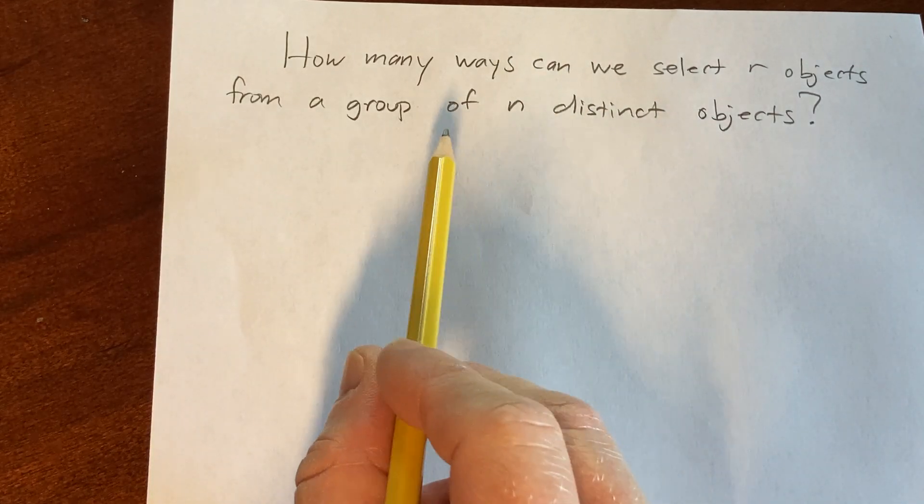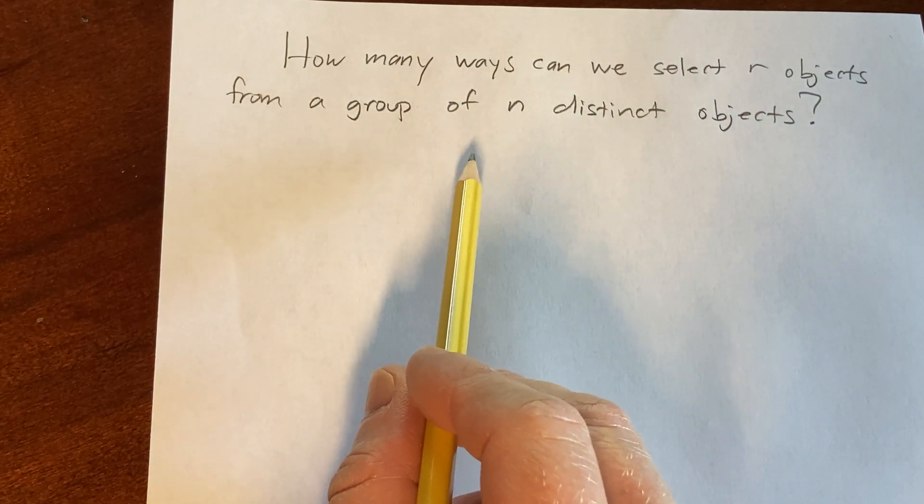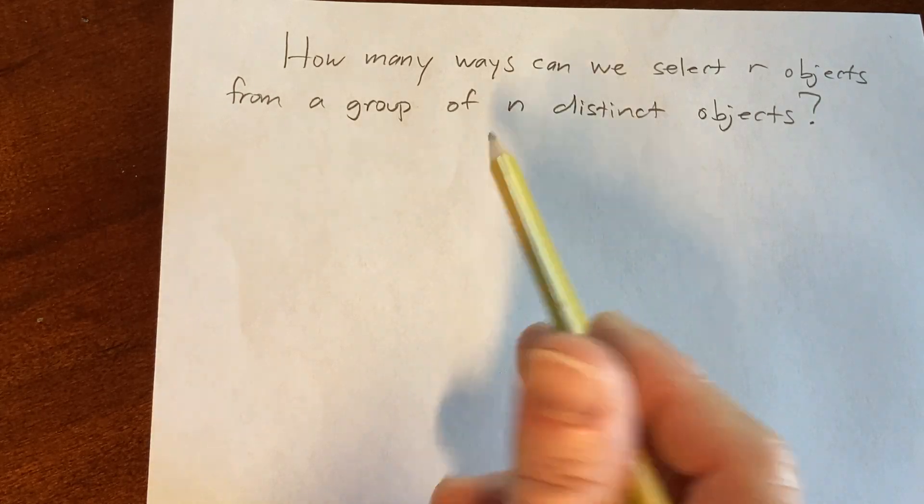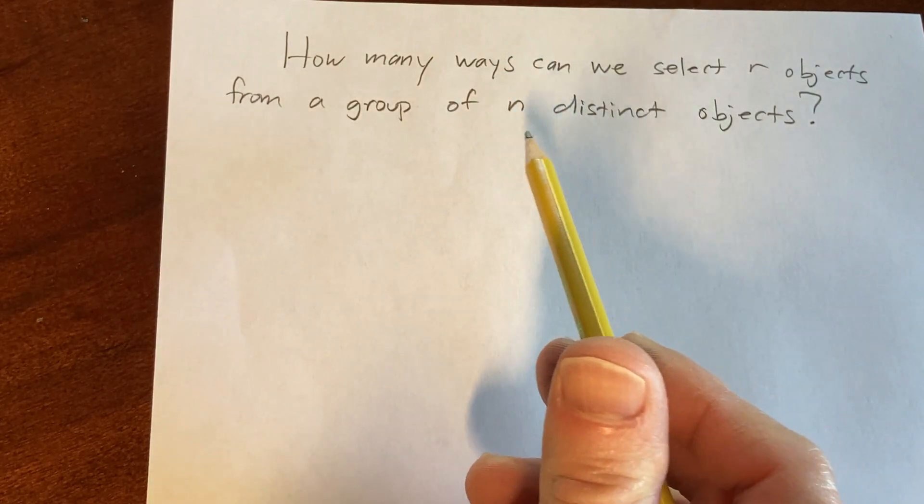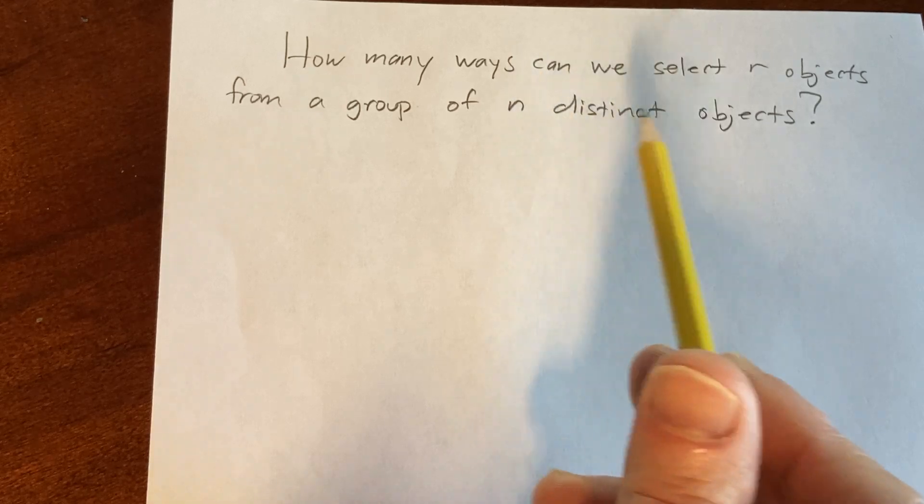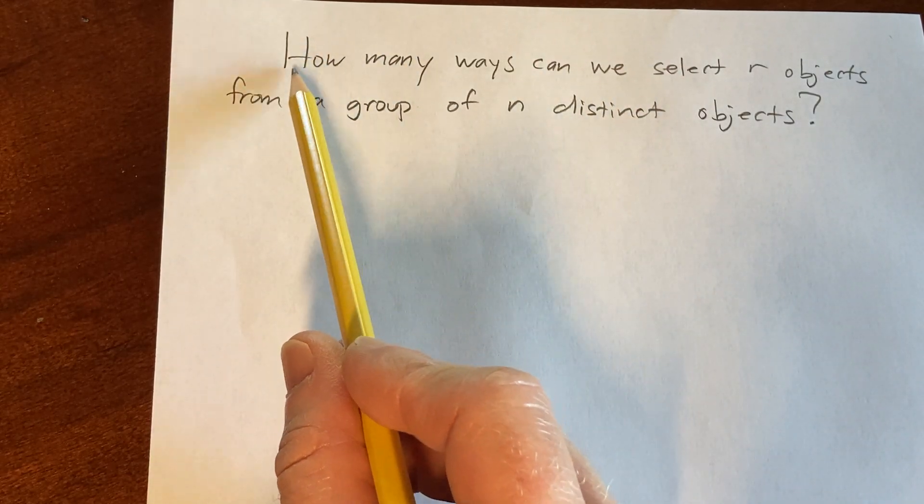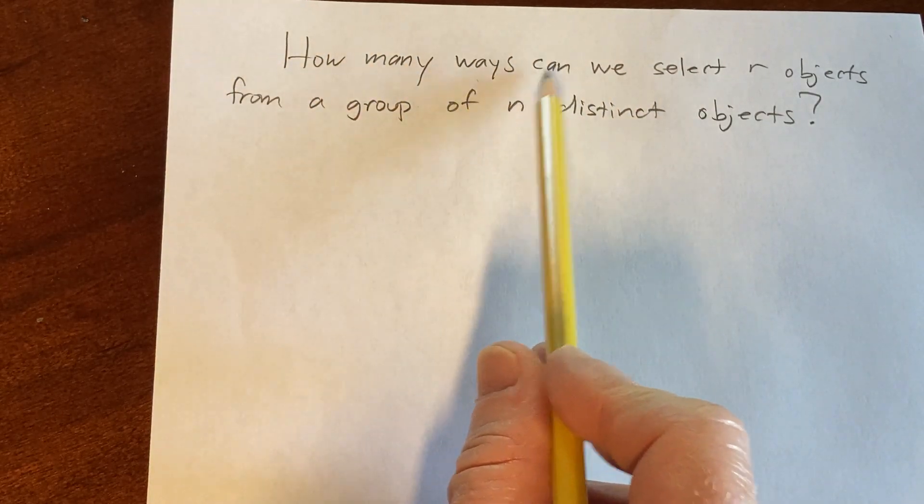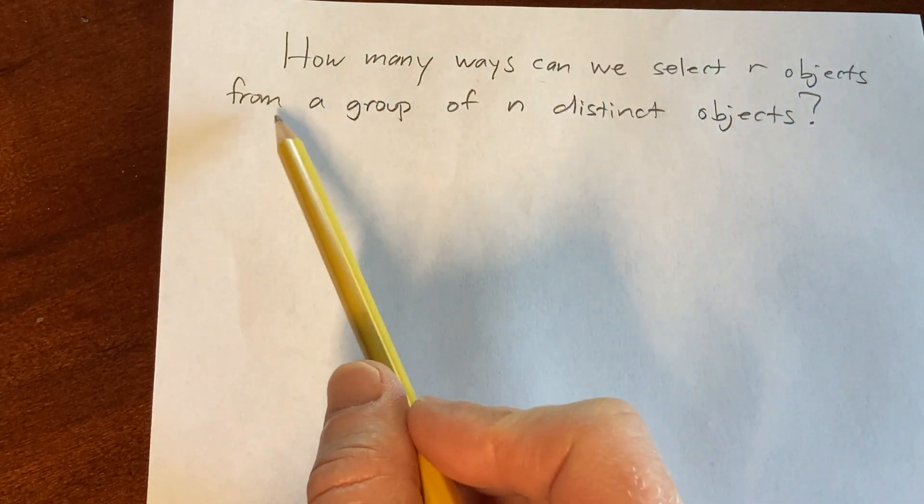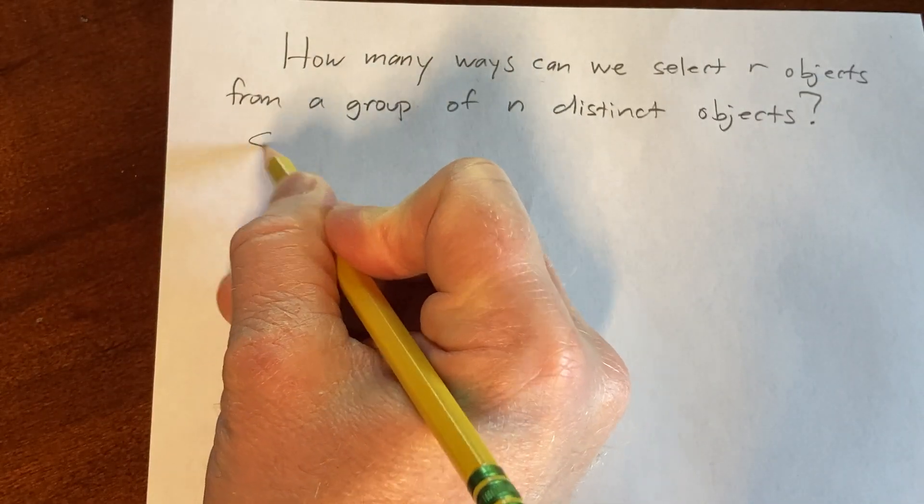Hi, in this video we're going to answer a question that is actually going to give us an important formula. Basically, we're going to derive the formula for the number of permutations. The question says how many ways can we select r objects from a group of n distinct objects? Let's work it out.